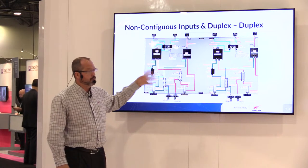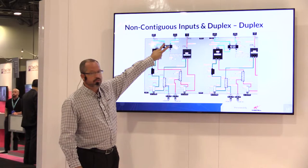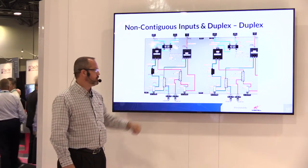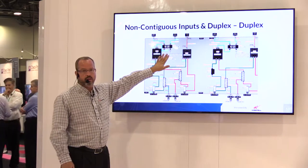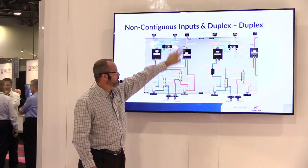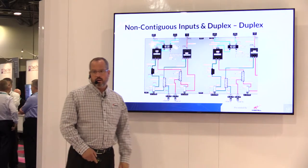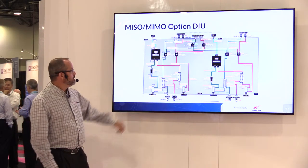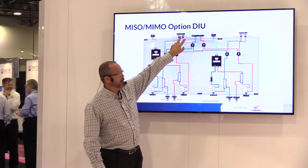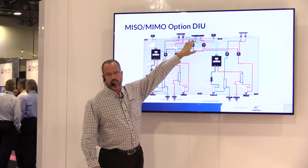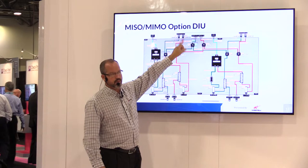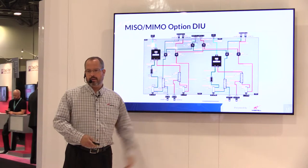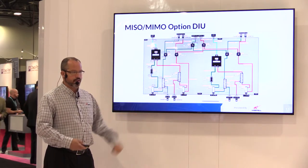We have some non-contiguous inputs and duplex-to-duplex. If you have two paths of non-contiguous PCS band and you want to combine them onto one path that you want to condition and come out as a single combined output, you can do that here. We can do that either coming out simplex, or we can re-duplex that signal if it's a passive DAS and you want to come out duplex. The MISO and MIMO option basically gives you an option of coming out — you terminate the MIMO ports when you want a single output, and you terminate the single output when you want to come out MIMO. This allows you to be MISO today but MIMO tomorrow if they add additional resources on the DAS to support MIMO.